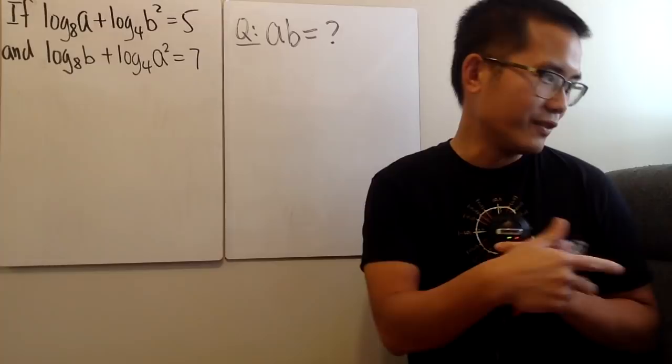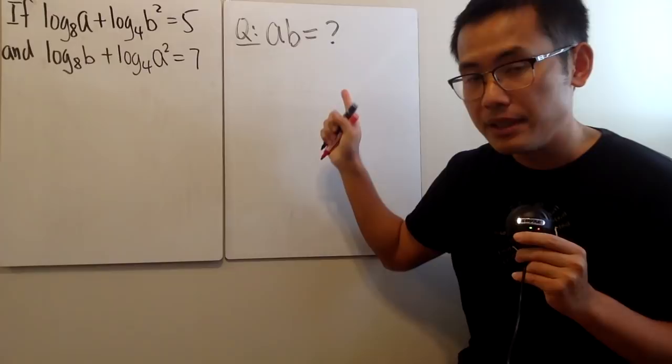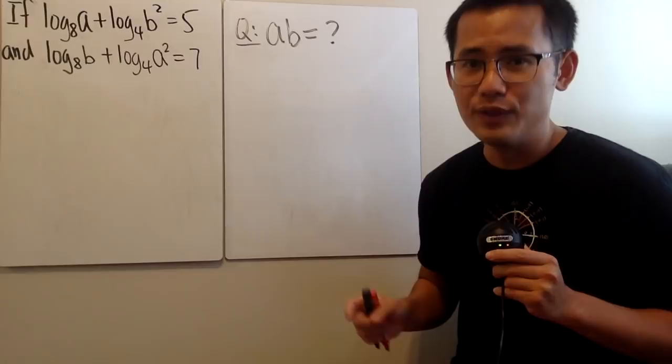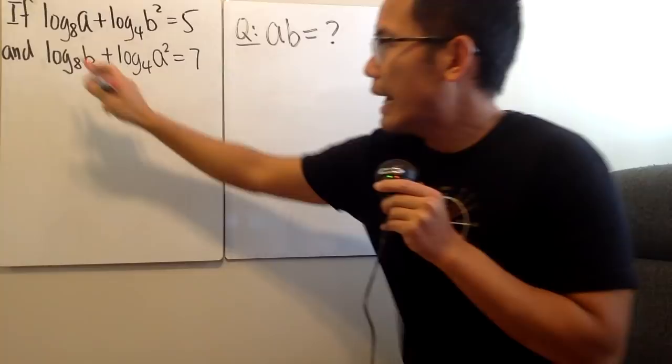I'm not going to go away because I don't have too much space. Go ahead, pause the video and do it. So if the question is asking us to find out the value for A times B, then you should not try to find out the value for A or B individually. This is how we can work this out. Notice for the first part, they have the same base, likewise for this and that.